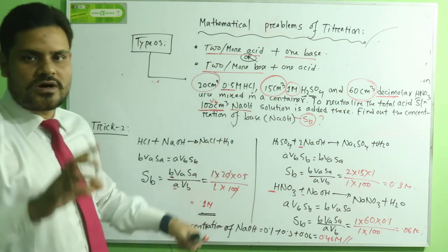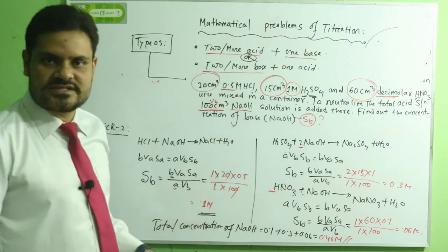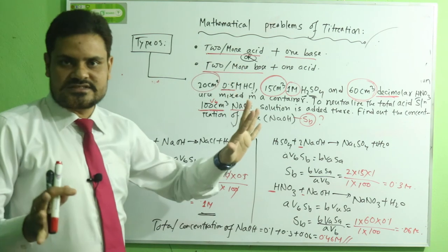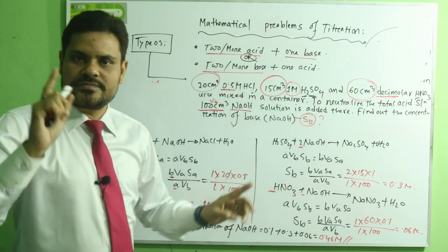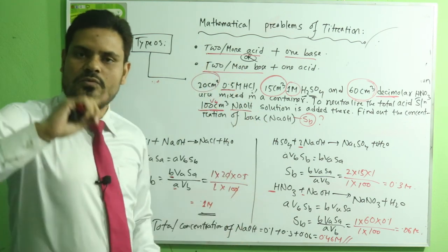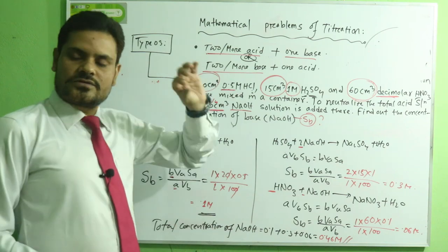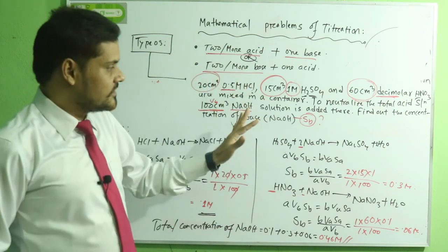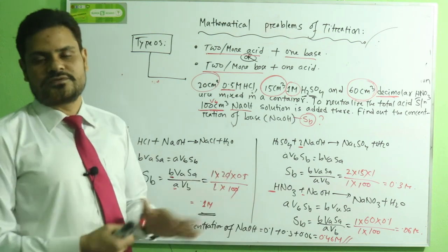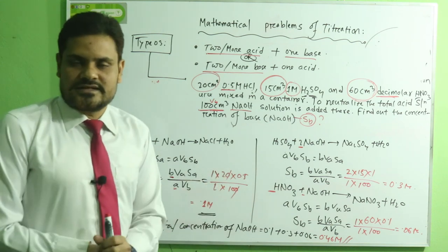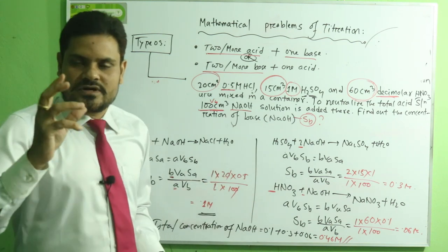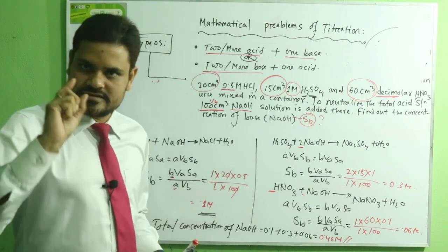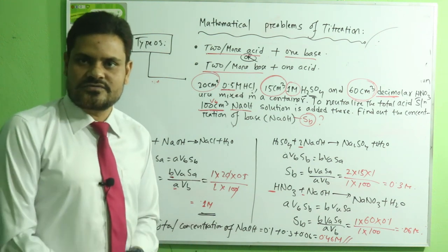When one base reacts with two or more acids, or one acid reacts with two or more bases, you can apply either of these two types of processes. Whichever process is easier for you, you can follow that approach to solve Type 3 titration problems.